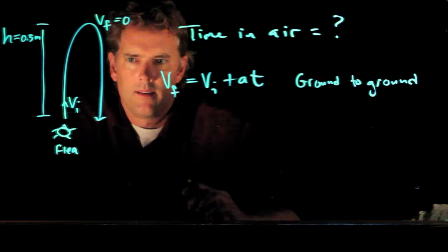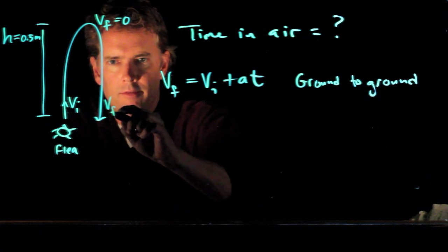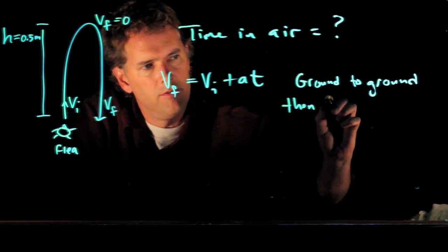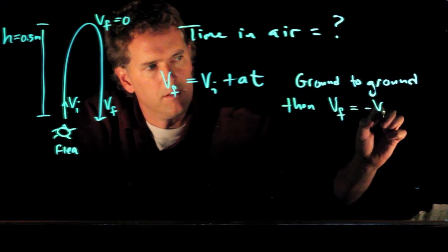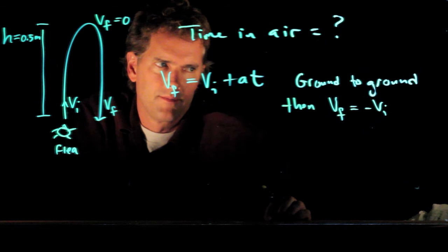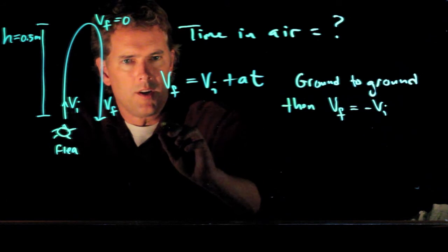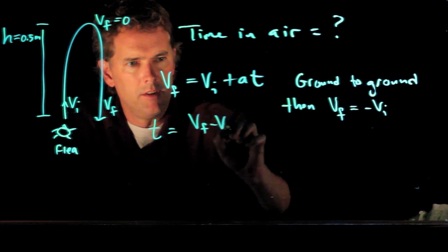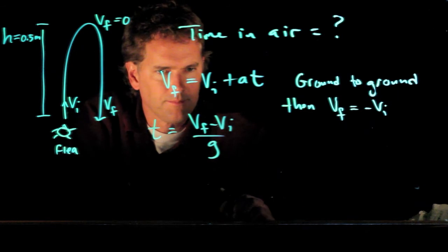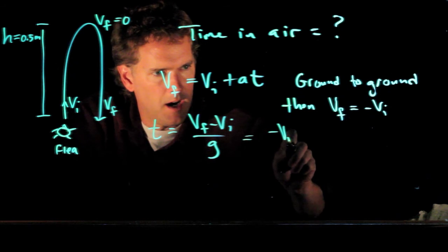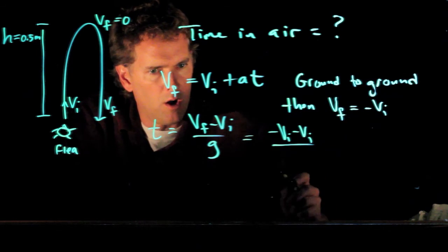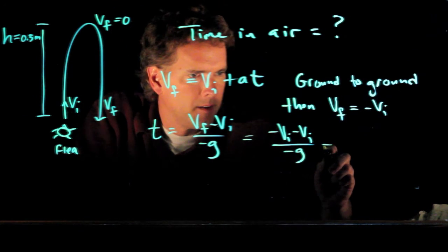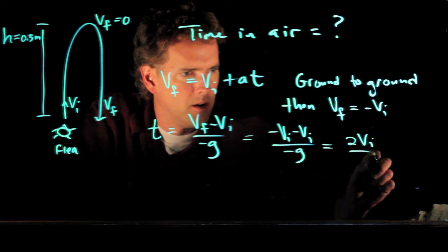And if we do that, we know that if they left the ground at VI and they come back down at VF, then VF is just the negative of VI. Let's solve this equation now for T. T equals VF minus VI all over A, which becomes negative G. And so we get 2 VI over G.